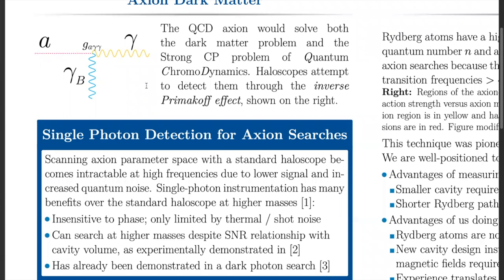We do this search by taking advantage of what's called the inverse Primakoff effect, which is this interaction between the axion and a magnetic field, which spontaneously creates a photon with this interaction strength g sub a gamma gamma.